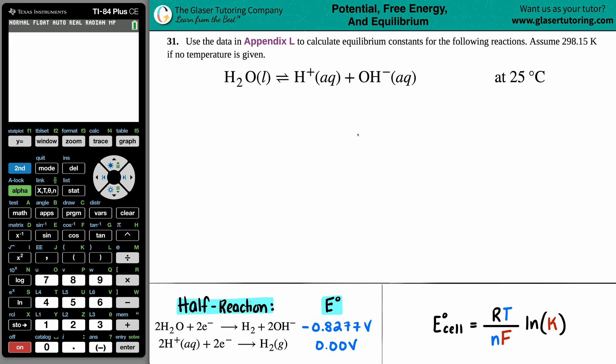Number 31, use the data in appendix L to calculate equilibrium constants for the following reactions. Assume 298.15 Kelvin if no temperature is given, but I automatically see that they gave us a temperature. It's at 25 degrees Celsius.